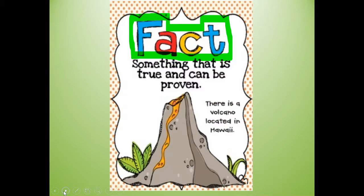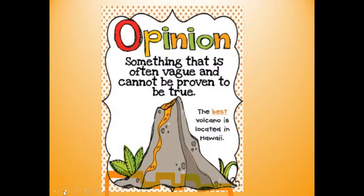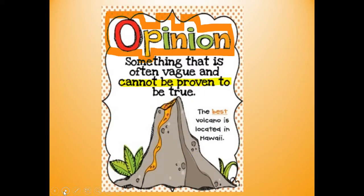Fact: a fact is something that is true and can be proven. For example, here's a fact: there is a volcano located in Hawaii. Opinion: something that is often vague and cannot be proven to be true. For example: the best volcano is located in Hawaii.